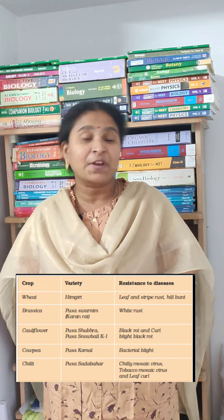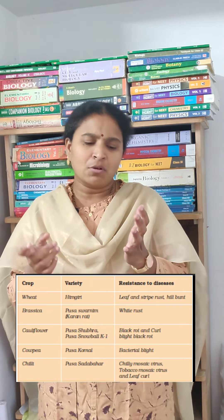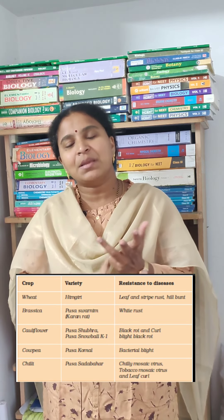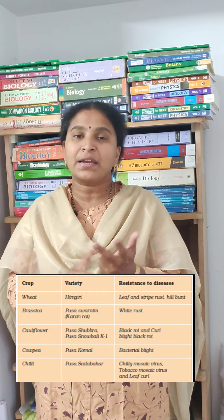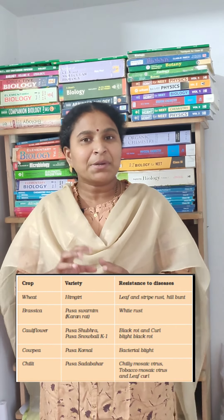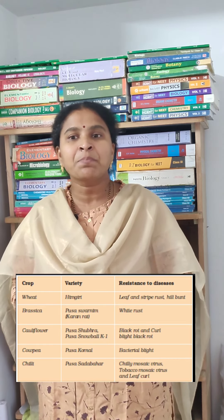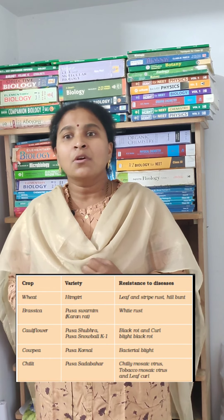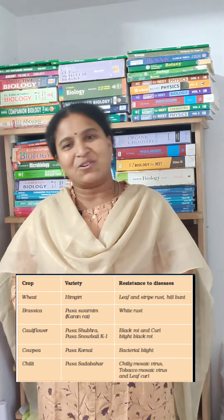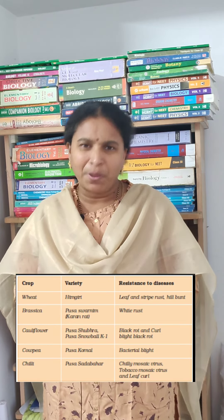The third plant is cauliflower. If you look at cauliflower, it is very much white like a snowball, so Pusa Snowball and Pusa Subhra are the improved variety names. Sometimes if you keep the cauliflower it gets rotten and shows black colored dots on it, meaning these varieties are resistant to black rot and curl blight disease.